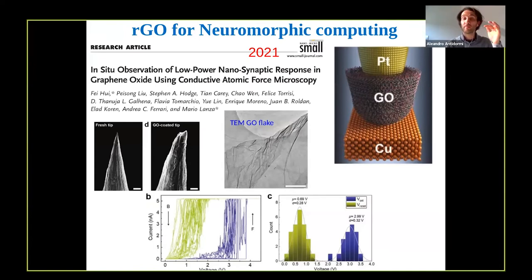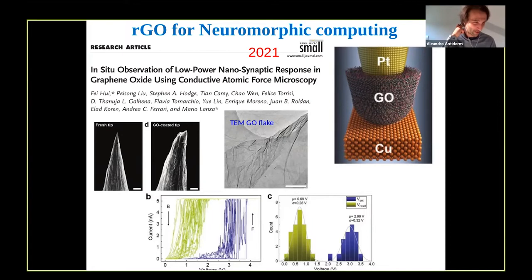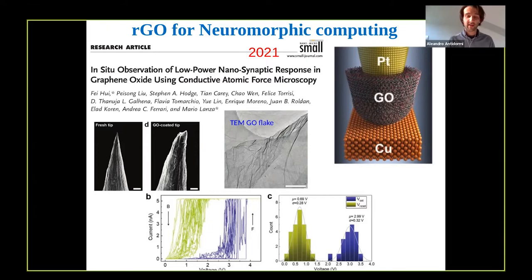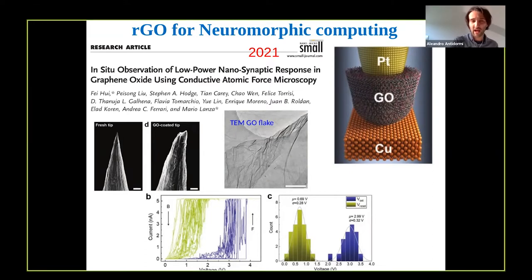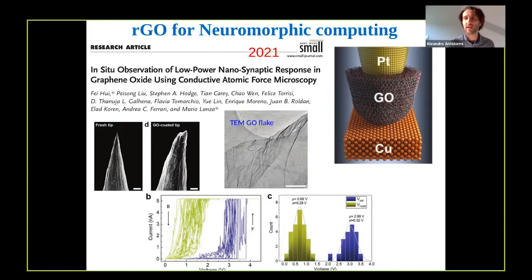Last year, in a very nice work, people demonstrated that graphene oxide can be used as a resistive switching material. When they created an interface between platinum, graphene oxide and copper, and characterized the current-voltage characteristics, they measured a clear hysteresis loop, which is typical of resistive switching behavior. The different curves, corresponding to different device replicas and repeated loops, also show the repeatability of the process.